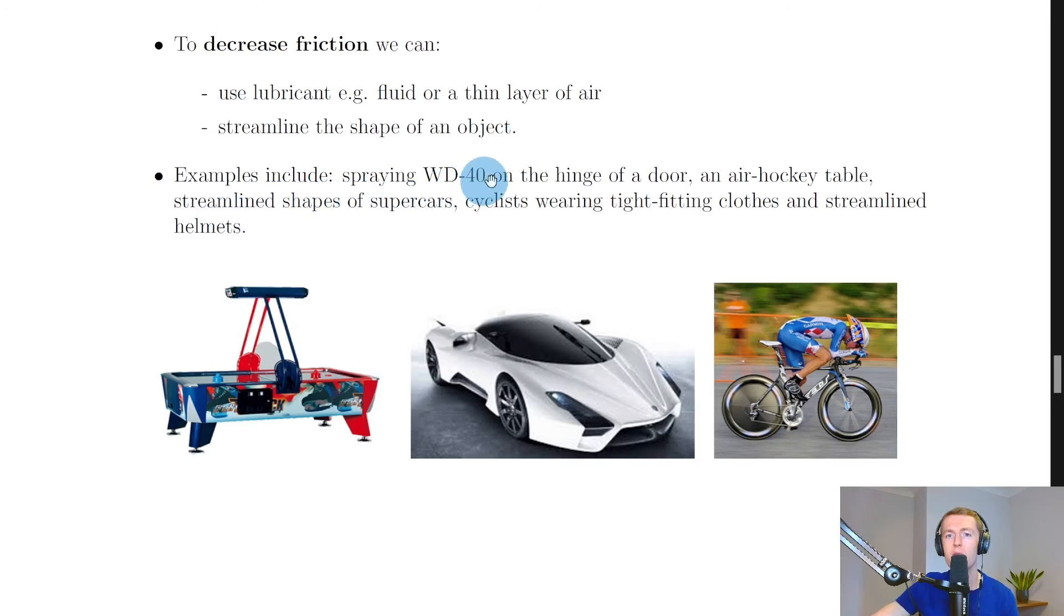Examples here include spraying WD-40 on the hinge of a door to stop it squeaking and to allow it to move more easily with less friction. An air hockey table, as shown in the picture here, which has lots of tiny holes on the surface of the table with air coming out of them. That produces a thin layer of air over the surface to allow the puck to move. We then have streamlined shapes of supercars. The air is going to easily pass over the body of the car, reducing the effects of drag or friction acting on it, which is going to allow it to travel faster. We also have cyclists, which can wear tight fitting clothes and wear streamlined helmets, as shown here. Their crouched position and having solid wheels sometimes also helps to reduce the friction.